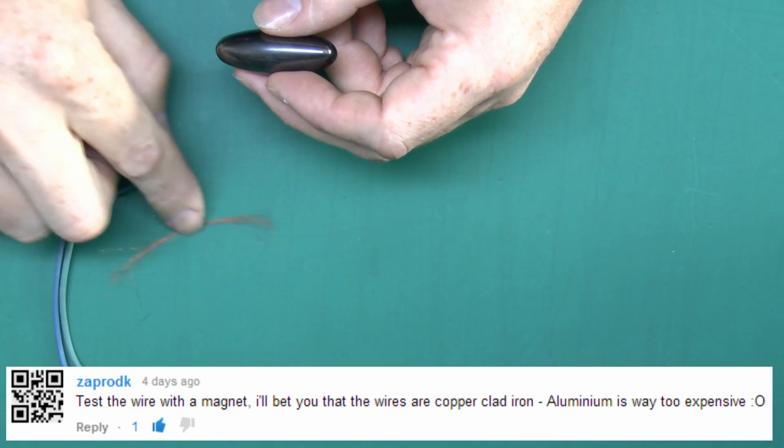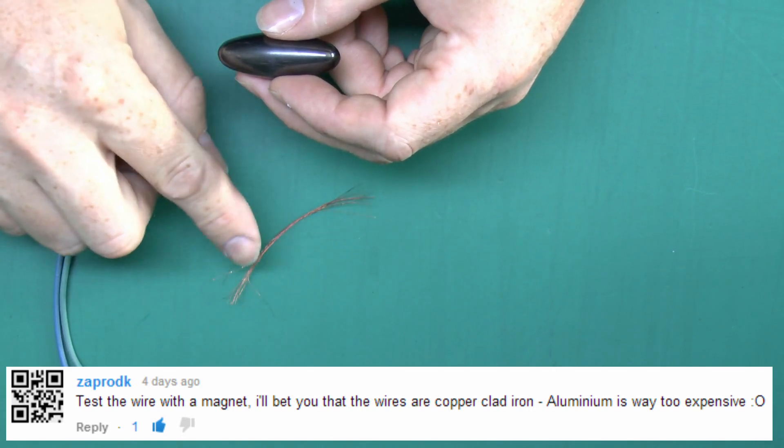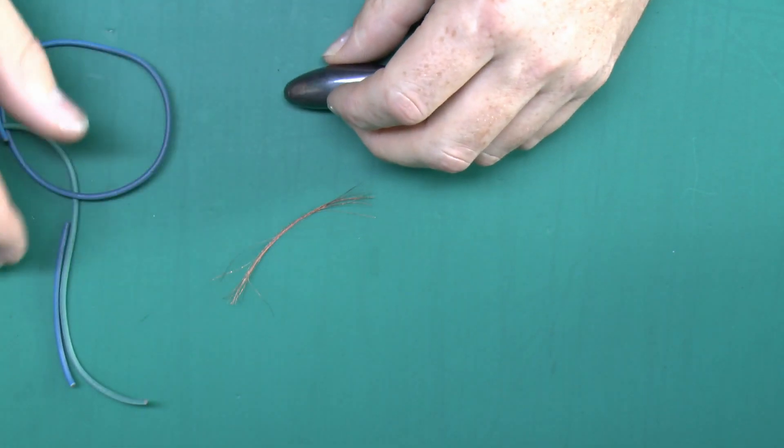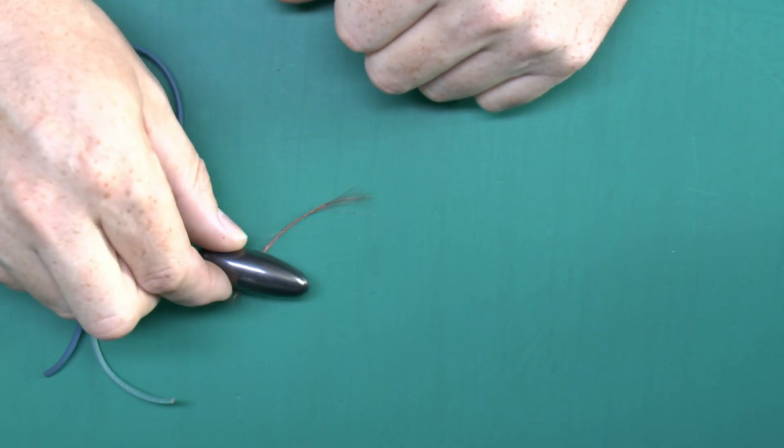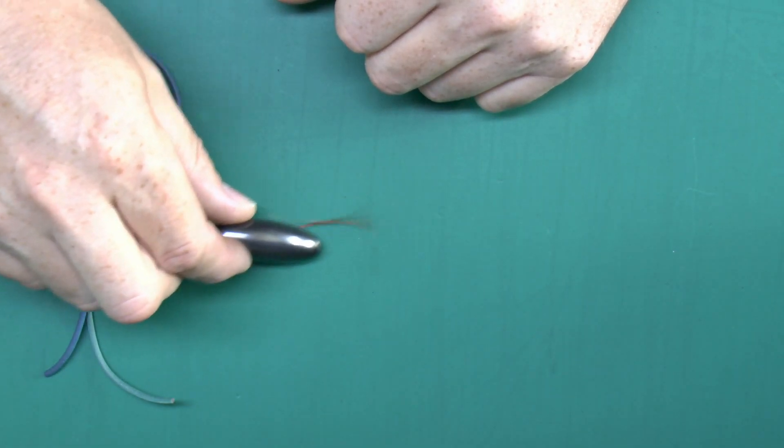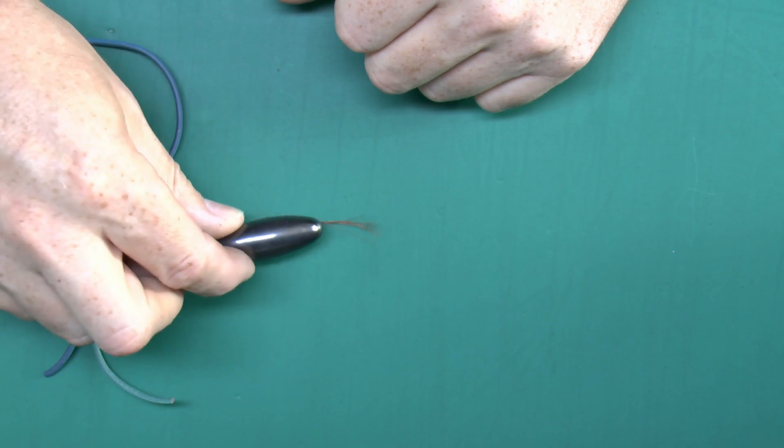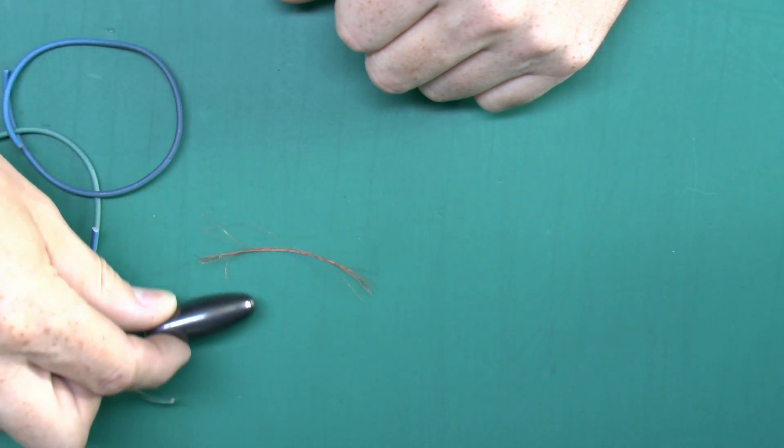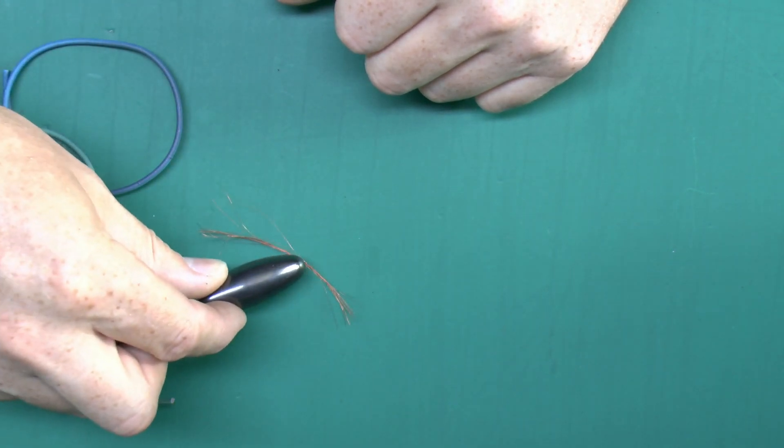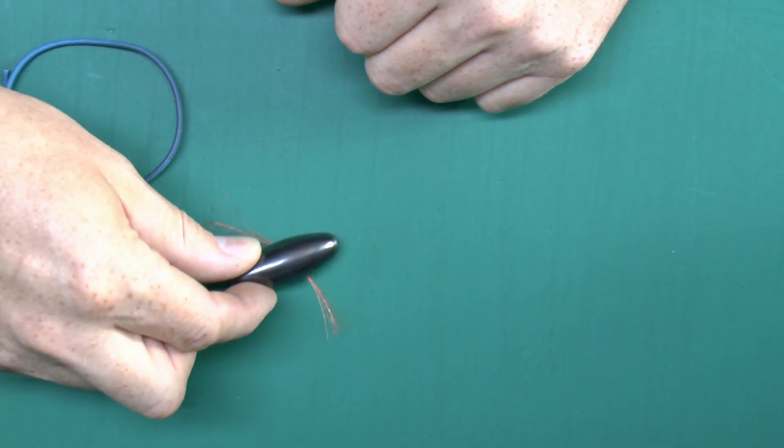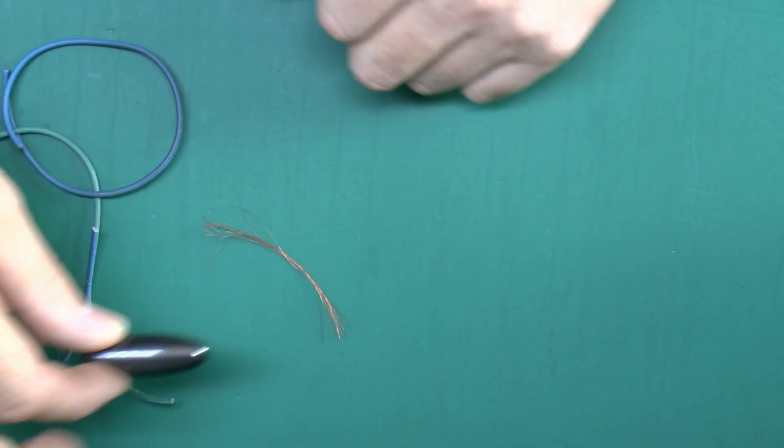I've got some of the inner conductor. It's not copper, it's some kind of other substance. Let's just see if they are attracted to the magnet or not. Well it appears that they are not. It's definitely not a ferrous material.